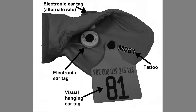Yearling time is a key time for collecting performance data on beef cattle operations. This should start with individual animal identification. A number of different identification methods are available to beef cattle producers.